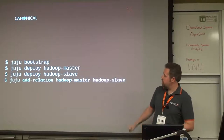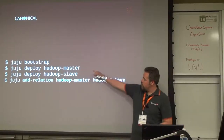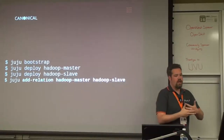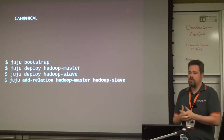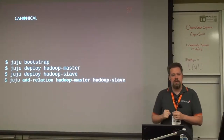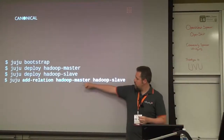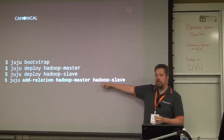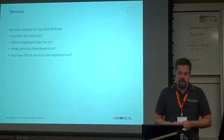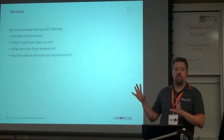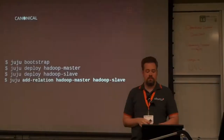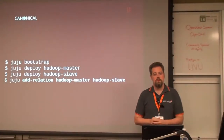As part of the bootstrap, you have a Hadoop master and a Hadoop slave. What the charms do is they define interfaces where the Hadoop master — you can, with one command, get them hooked up. So you're doing juju bootstrap, juju deploy Hadoop master.